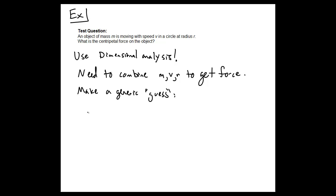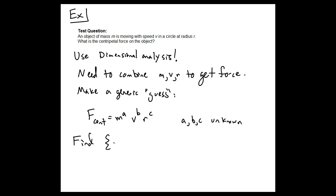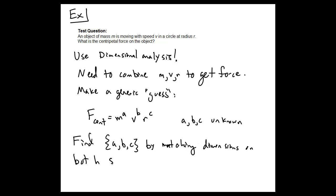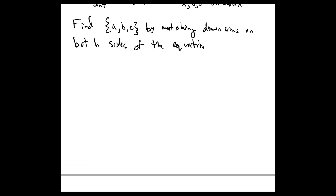So we make a generic guess. We say the centripetal force is mass to some power a, speed to some power b, and radius to some power c, where a, b, and c are unknown. Our goal is to find these quantities by matching dimensions on both sides of this equation, and that's how we'll figure things out.